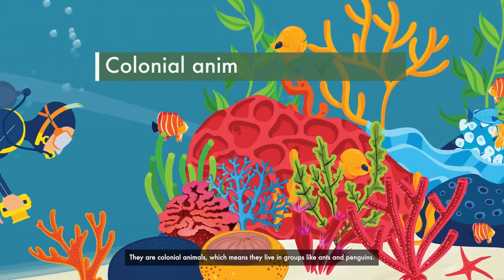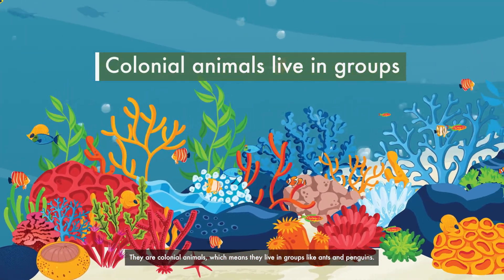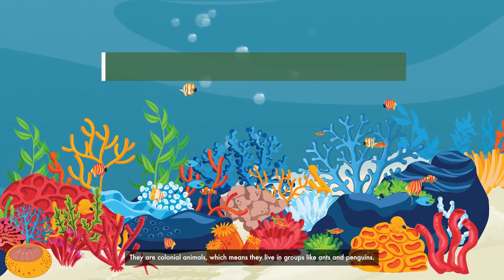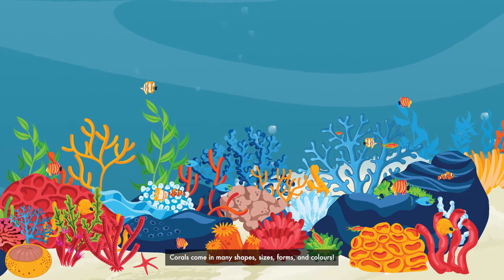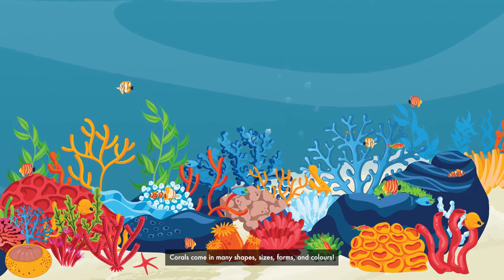They are colonial animals, which means they live in groups like ants and penguins. Corals come in many shapes, sizes, forms, and colors.